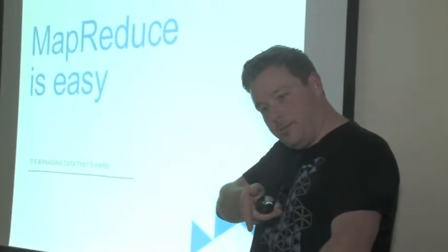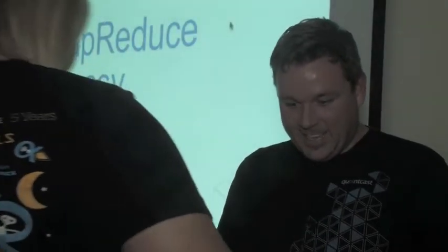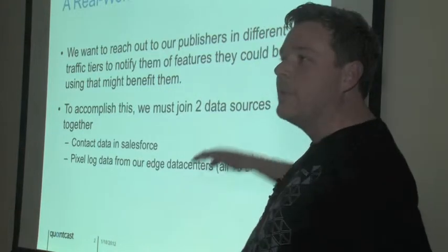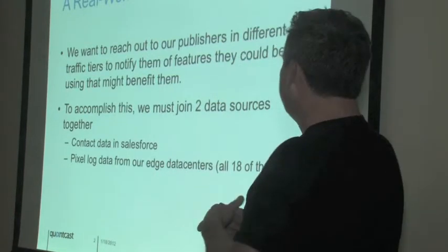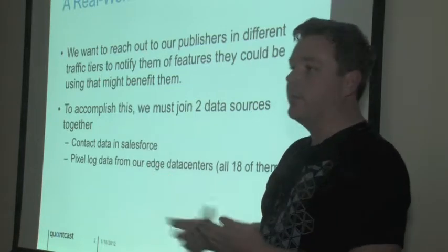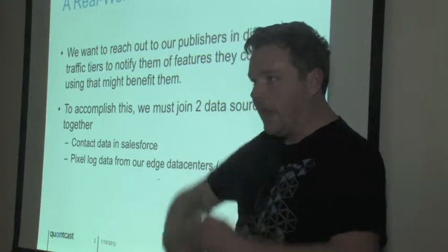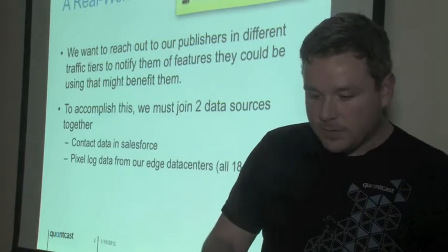So here's a real-world problem — a contrived real-world problem, but something that could possibly be a real-world problem. We want to reach out to our publishers in different traffic tiers to notify them of some features they might be able to use. So we need to look at two different data sources: our Salesforce contact data to get their email addresses, and our pixel log data from our edge systems to determine what traffic tier they're in. The fact that we need to join these two data sources — that gets interesting.